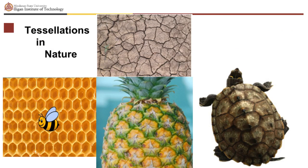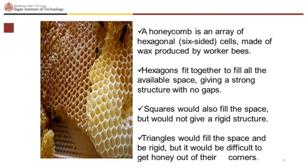Tessellations in nature can also be observed. Here is a honeycomb with an array of hexagonal, six-sided cells made of wax produced by worker bees. Hexagons fit together to fill all available space, giving a strong structure with no gaps.